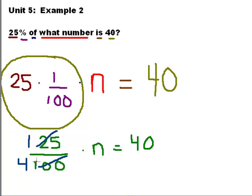Now I have 1 fourth times n equals 40. When I have a fraction times a variable equals a number, I multiply both sides by the reciprocal fraction. So in this case, I want to multiply both sides by 4 over 1.